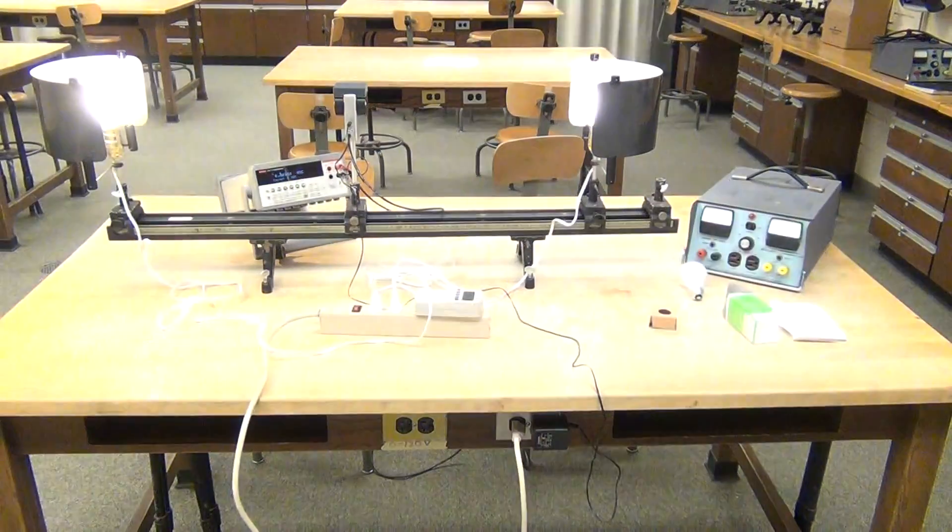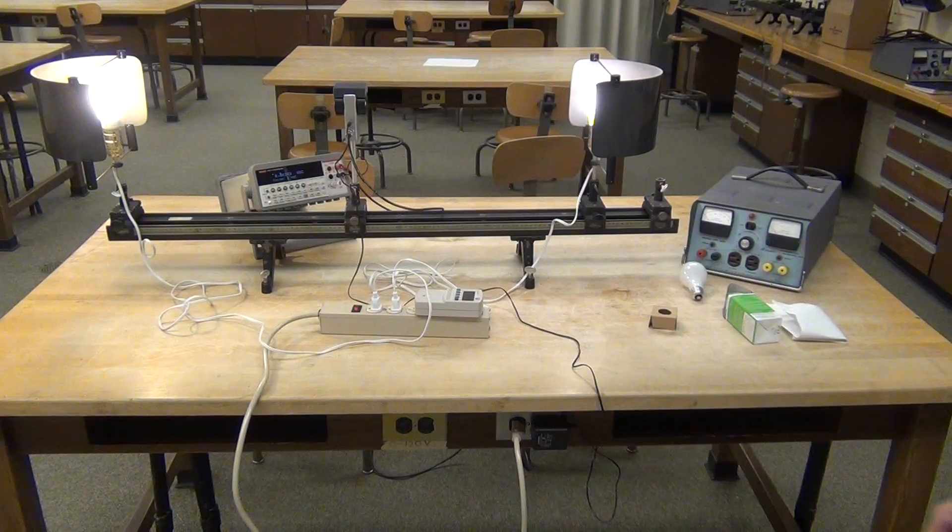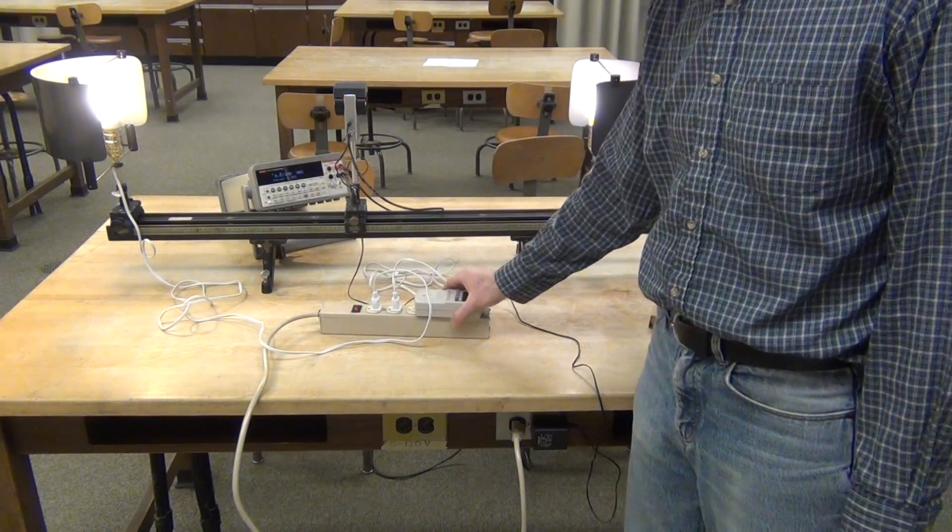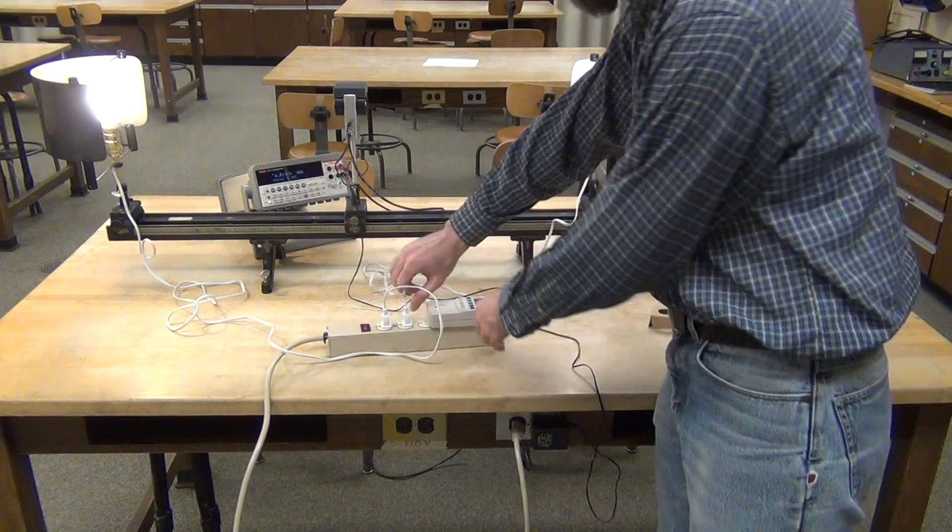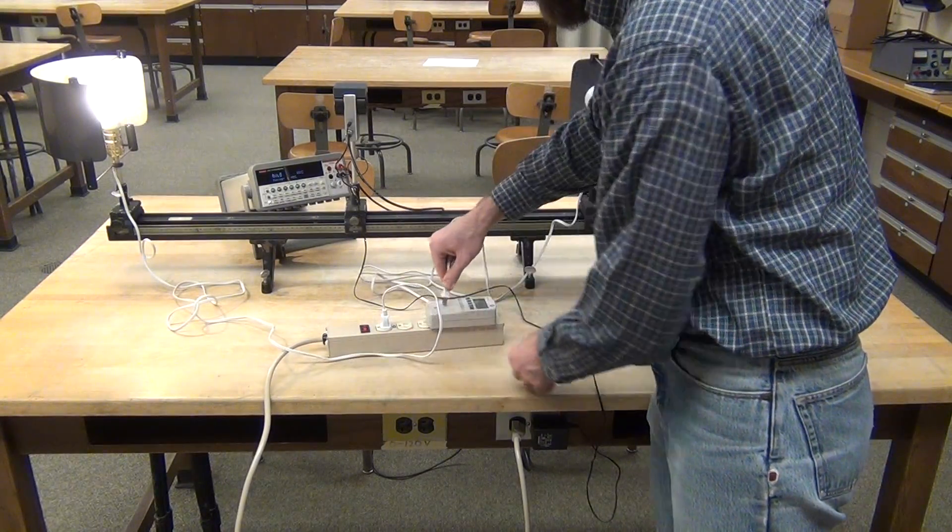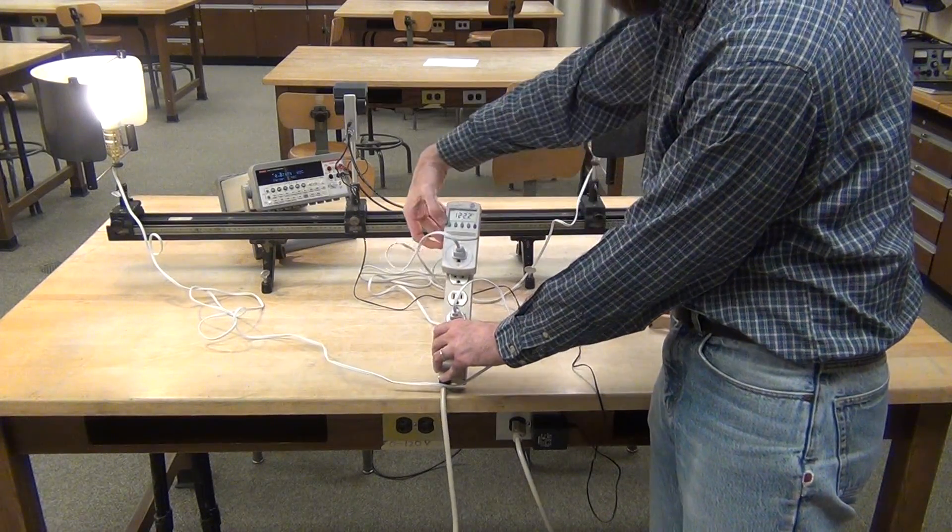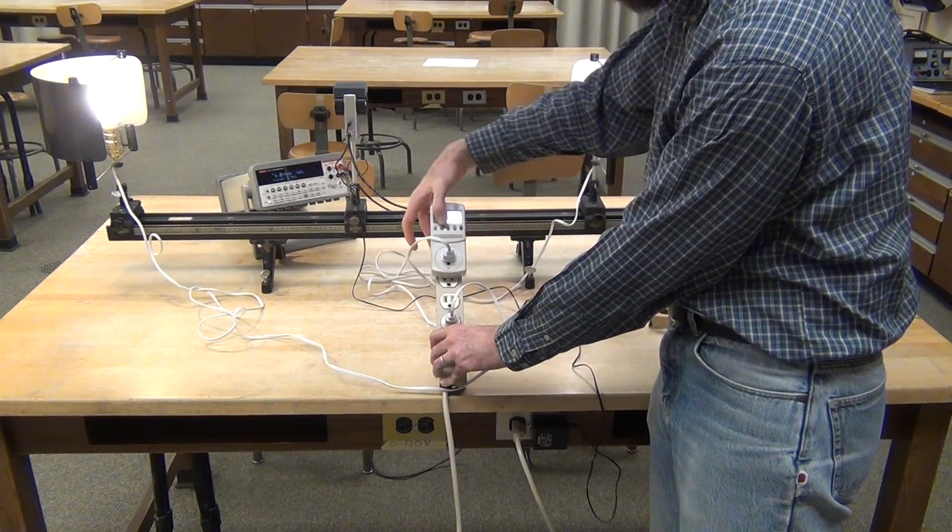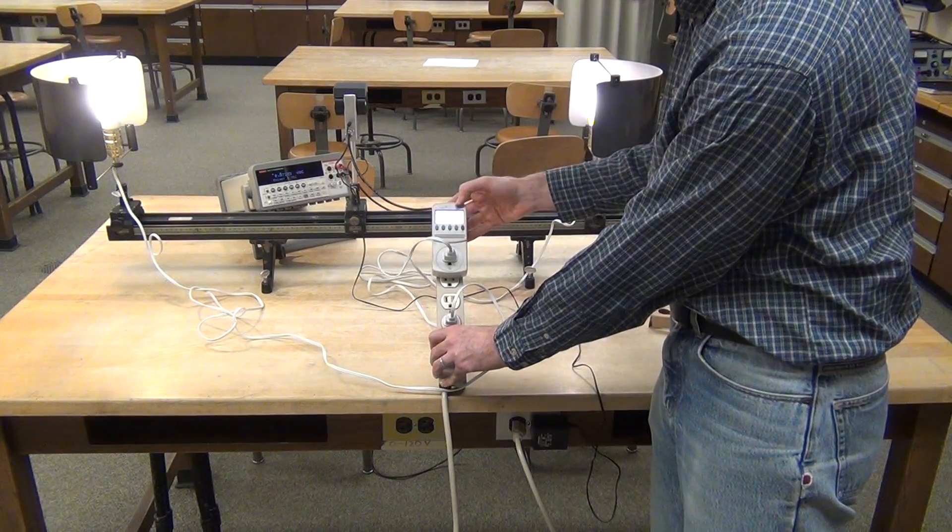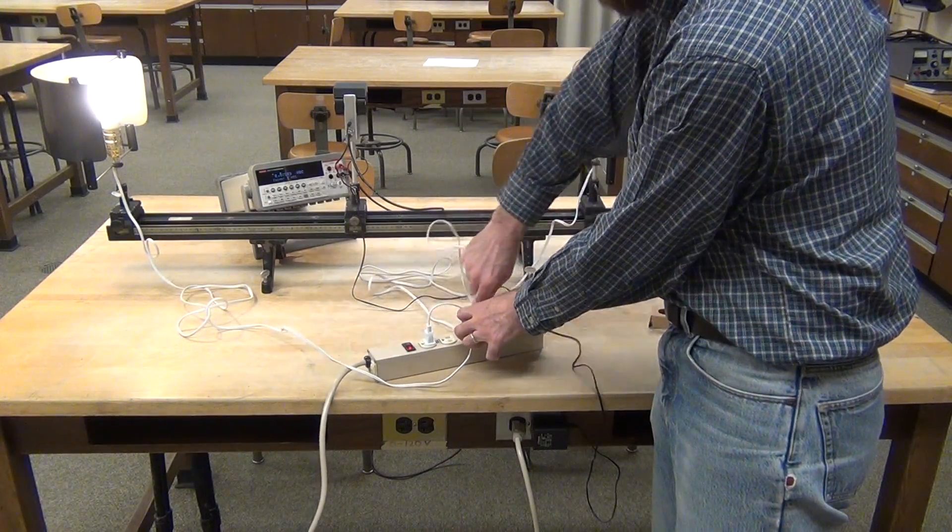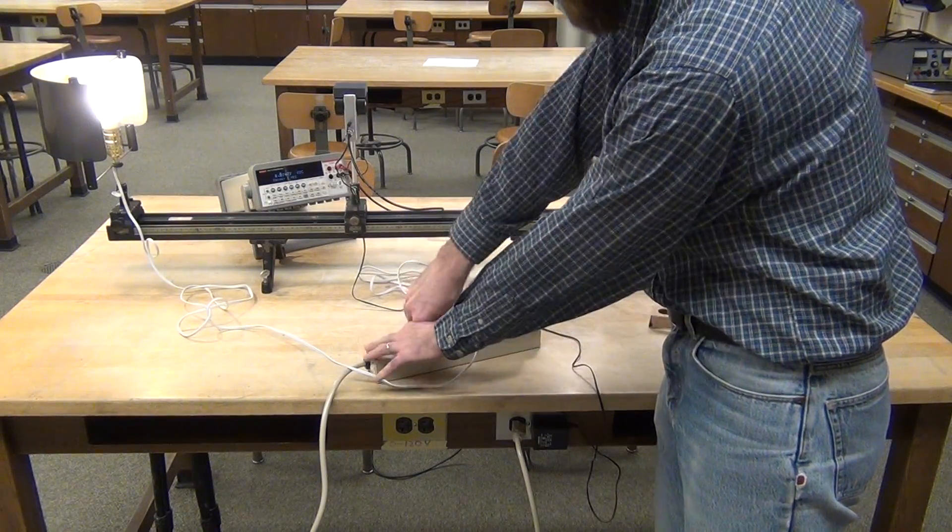Once you have that equal intensity spot, you can measure the electrical power that each bulb is using with a kilowatt meter. Unplug it from the power strip, plug it in, and the kilowatt meter can read the voltage or the current being drawn. Do that for both bulbs.